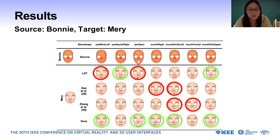The blend shape eye squint is of high quality when applied using the LDT method, with no issues present. However, when obtained using Gauss and Zhang's method, there were some deformations in irrelevant areas. Our method results in minimal deformation of the lower eyelid. The blend shape jaw open, when obtained through the LDT method, may result in corrupted deformation of the lips. The method proposed by Gauss may lead to asymmetric deformation and unexpected closure of the left eye, and Zhang's method also leads to asymmetric deformation. In contrast, our method has no such issues and produces a high-quality blend shape that preserves the shape and symmetry.